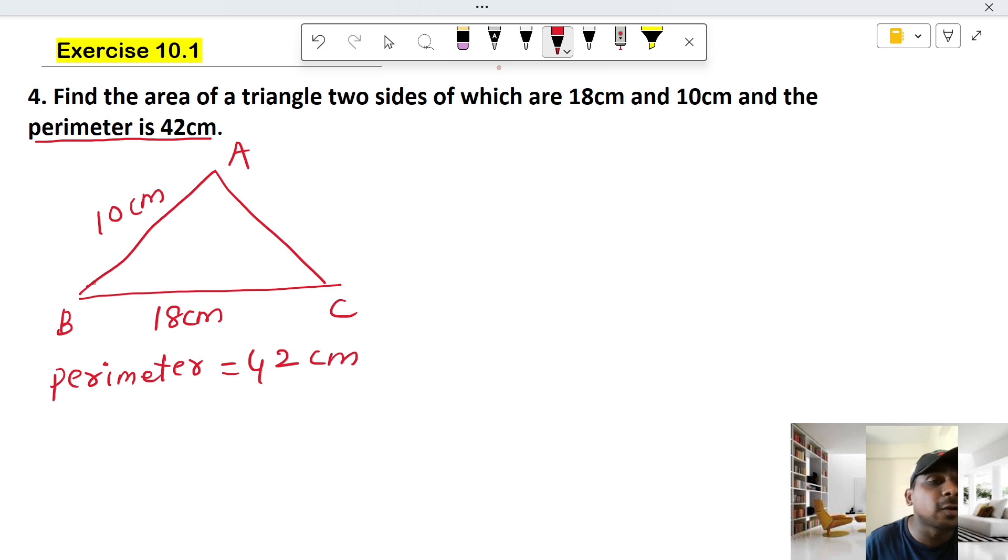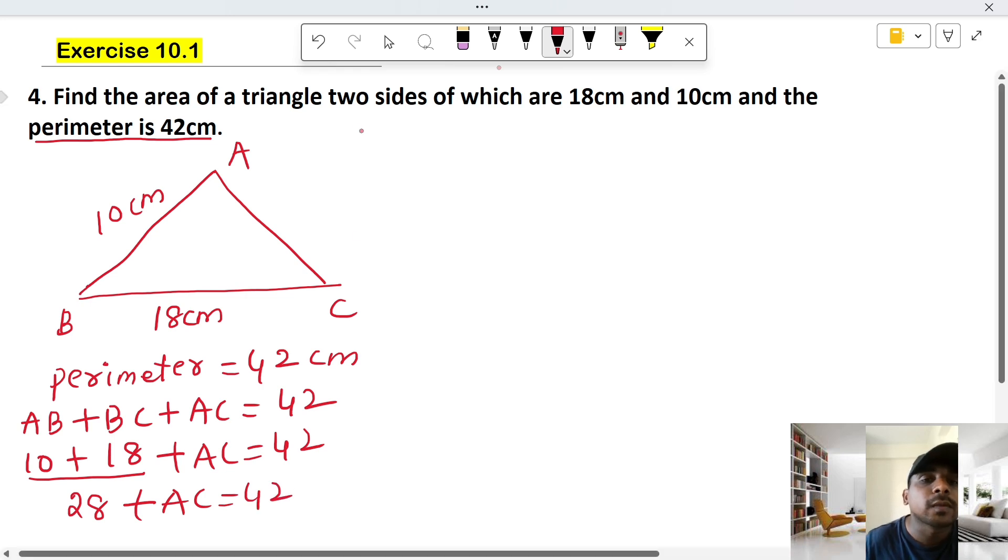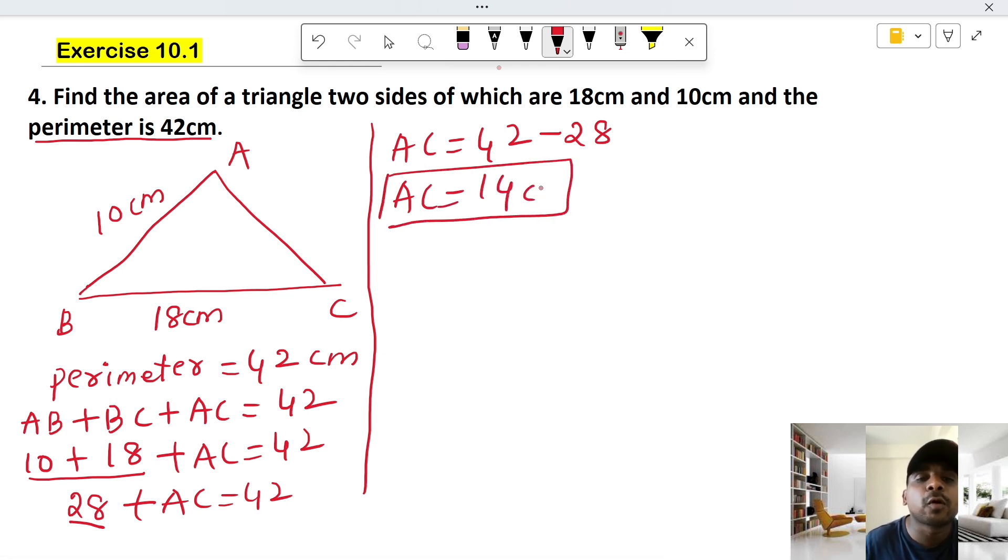For the perimeter, which is the outside boundary, A plus B plus C equals 42. We have 10 plus 18 plus AC equals 42, so 28 plus AC equals 42. Subtracting 28 from both sides, AC equals 14 centimeters.